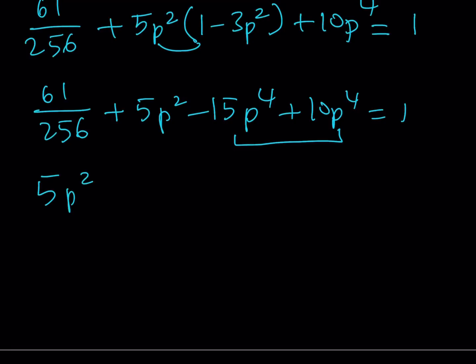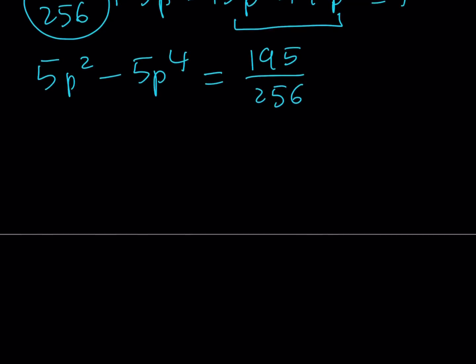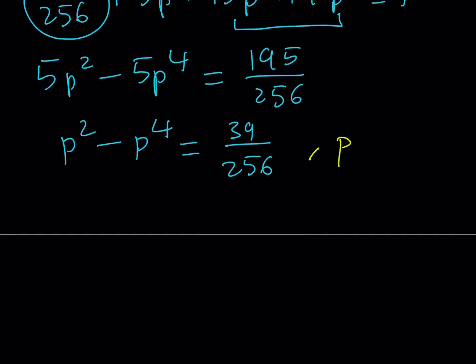Subtracting 61 over 256 from 1 gives 195 over 256, which is divisible by 5. Dividing both sides by 5 gives P squared minus P to the 4th equals 39 over 256. Even though this looks like a quartic equation, it's actually biquadratic, so we can turn it into a quadratic by substituting U for P squared.